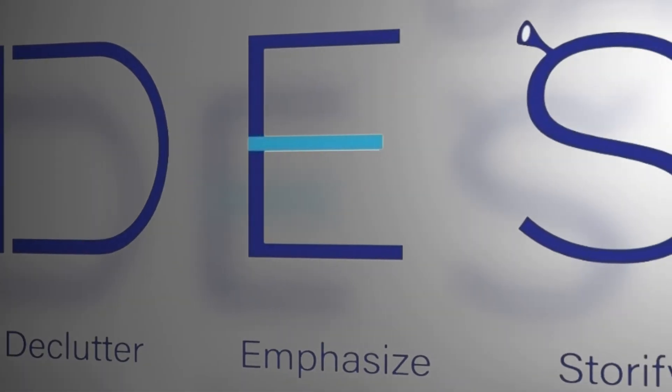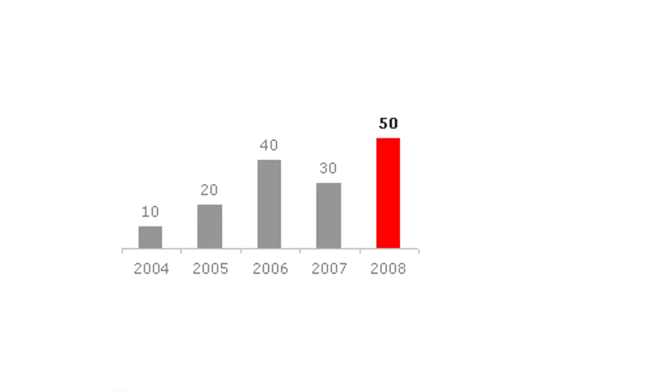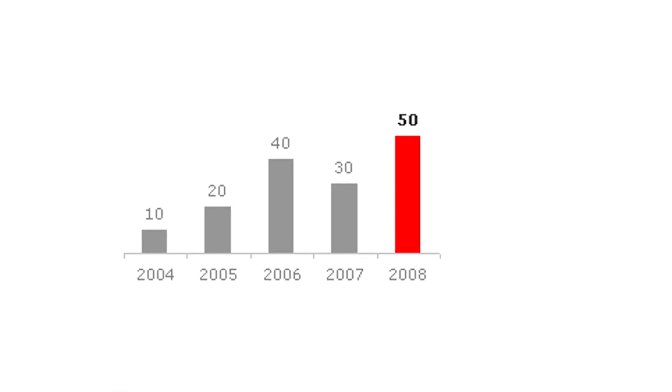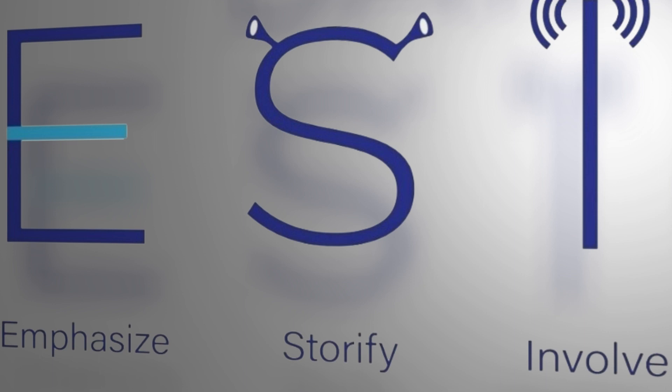The E stands for emphasizing — bring out visually the key element in your charts. The S stands for storytelling. Make sure you make your data emotionally engaging and surprising, and that you structure it into a three-part narrative: situation, complication, resolution. Connect the data to what people really care about, like in a good story.